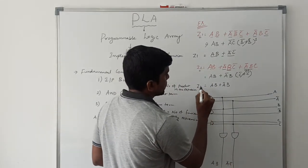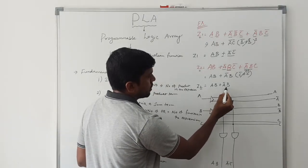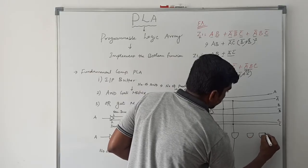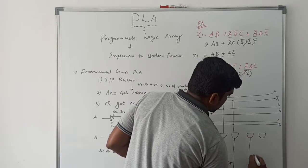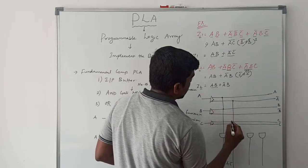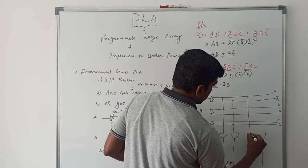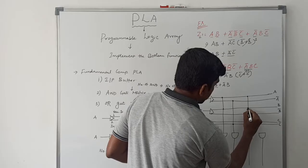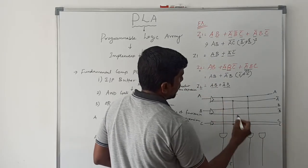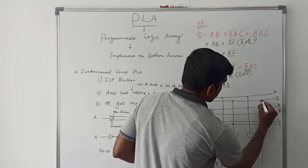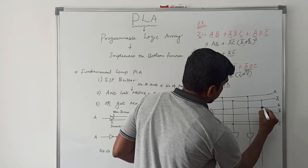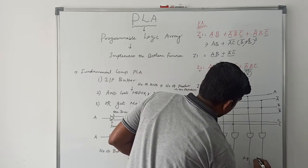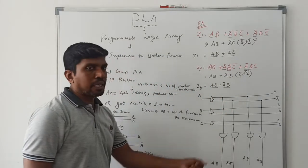For the second function Z2, we also have two product terms, so I draw two AND gates. The first product term is A·B, and the second product term is A̅·B. The AND gate matrix drawing is complete.